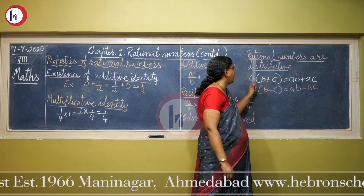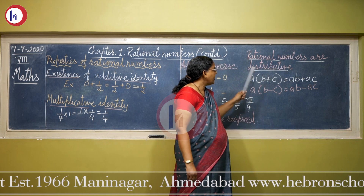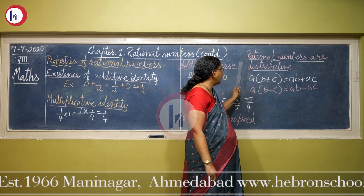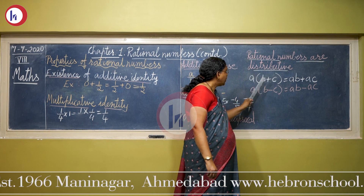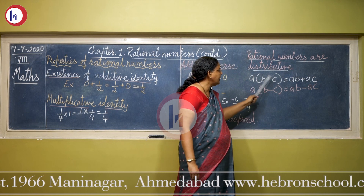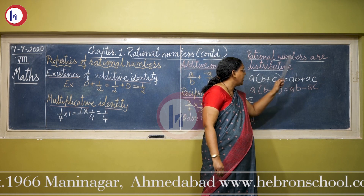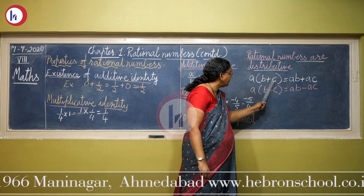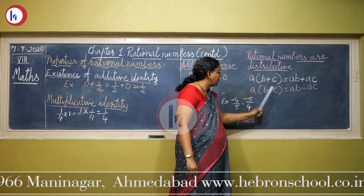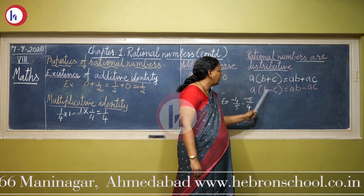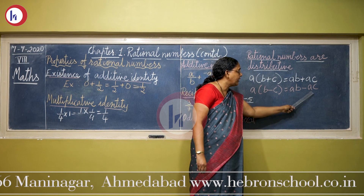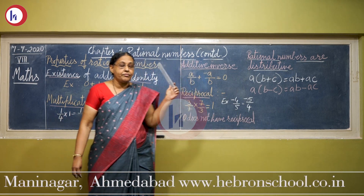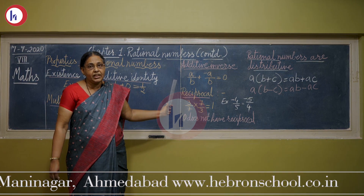Now let us see the distributive property. There is a distributive property for rational numbers: a can be distributed with b and c. That means a × (b + c) = ab + ac — multiplication distributed over addition. Also, a × (b − c) = ab − ac — multiplication distributed over subtraction. Using this property we can solve some sums.